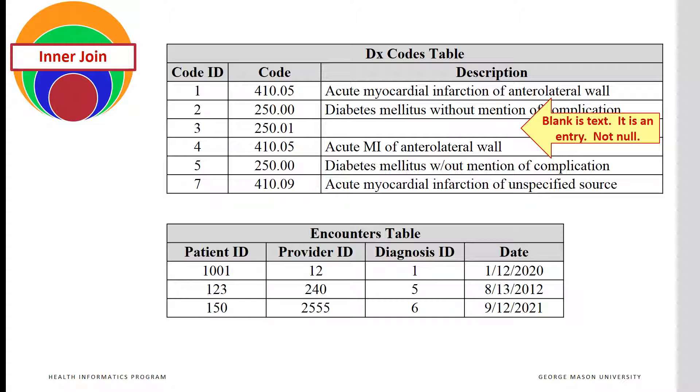For example, consider the two tables in this slide. One containing description of diagnosis codes and another reports of encounters that refer to diagnosis. The description table includes text describing the nature of the diagnosis. The encounter table includes no text and just IDs and codes that can be used to connect to the description table.